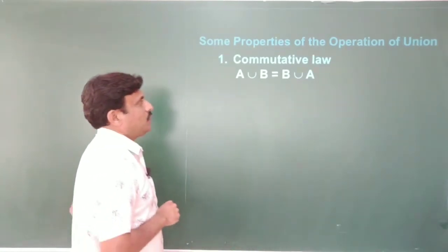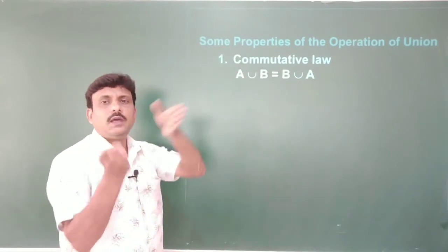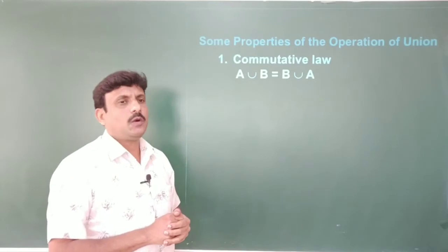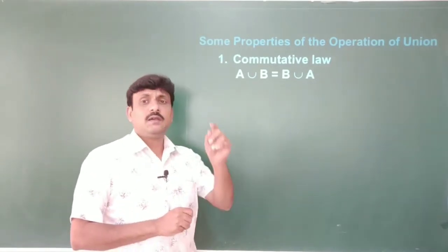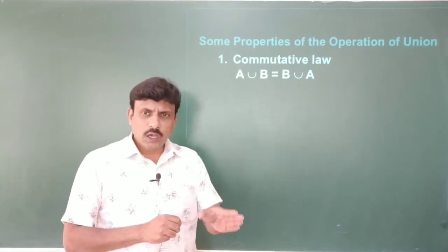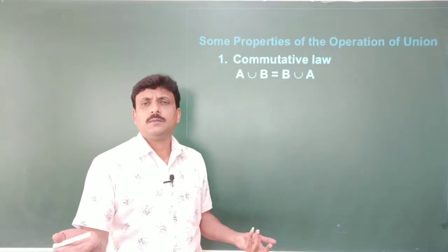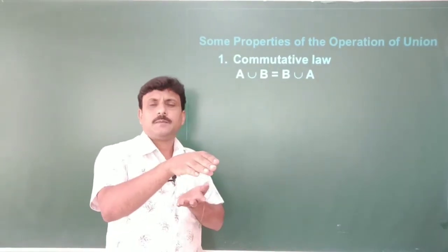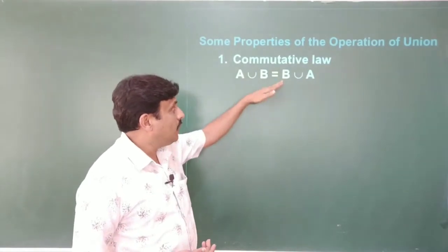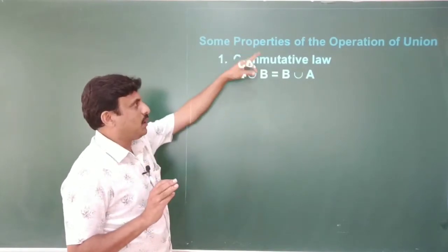Next, take the properties of union. Some basic properties are: first, A ∪ B = B ∪ A. This law is called the commutative law.